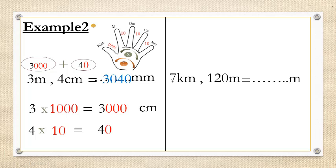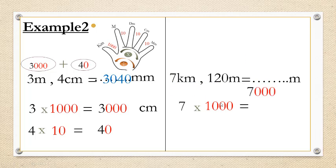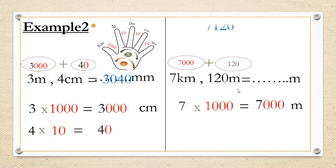The next example: we have 7 kilometers and 120 meters — how many meters? Here we will change only the kilometers, because the other unit is already meters. Write down 7, multiply — kilometer to meter — times 1,000. Equal 7,000. Then 7,000 plus 120 equals 7,120 meters.